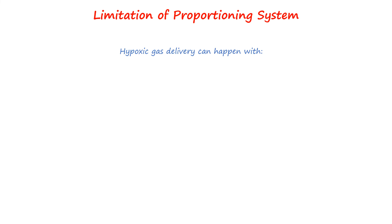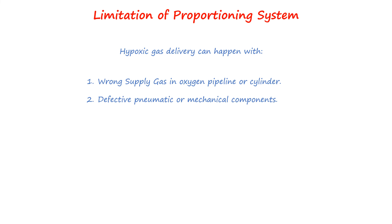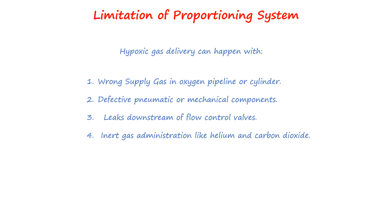Machines equipped with proportioning systems can still deliver a hypoxic mixture under certain conditions: wrong supply gas in the oxygen pipeline or cylinder, defective pneumatic or mechanical components, leaks downstream of flow control valves, or inert gas administration such as helium or carbon dioxide. Proportioning systems generally link only nitrous oxide and oxygen, so use of an oxygen analyzer is mandatory if the operator uses a third inert gas.